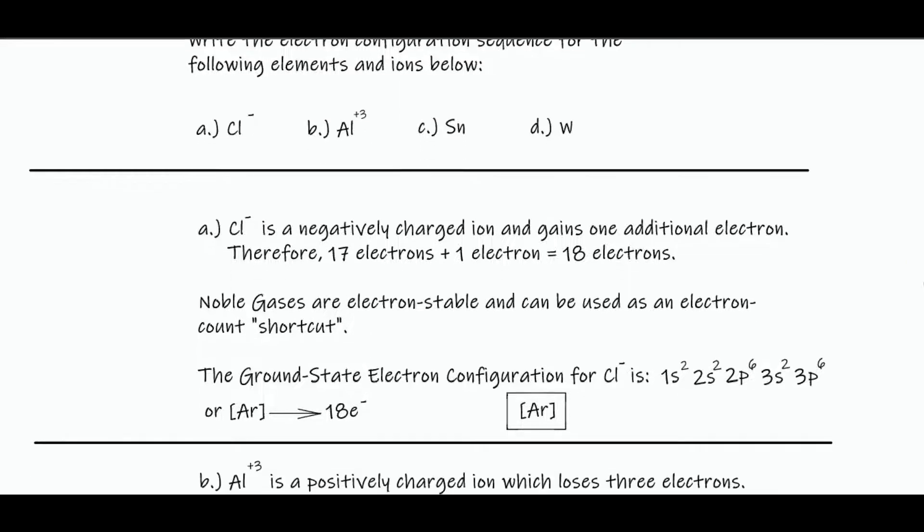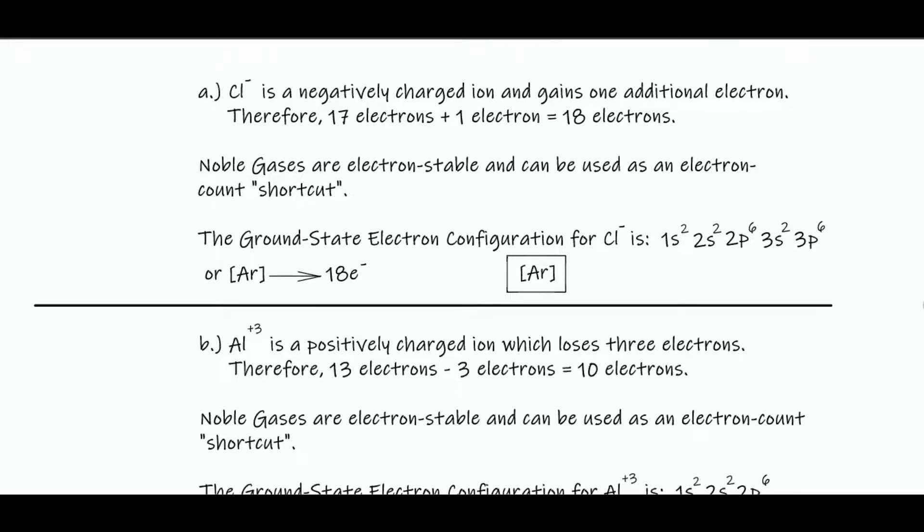So we'll start with chloride. Chloride is a negatively charged ion and gains one electron. Therefore, 17 electrons plus one electron is 18 electrons. So if we write the configuration sequence for chloride, it's 1s2, 2s2, 2p6, 3s2, 3p6,